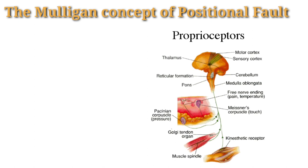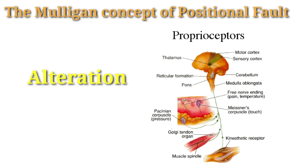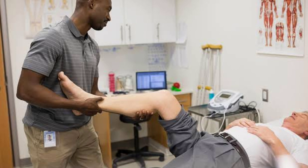In our body, we have a normal proprioceptive feedback that maintains all these balances. If there is an alteration in our joint position or tracking during movement, it will be provoked. So, we have symptoms of pain, stiffness, or weakness in the patient.